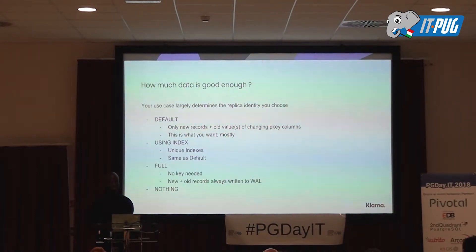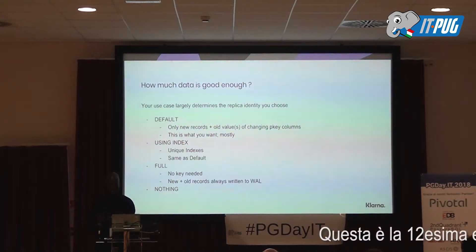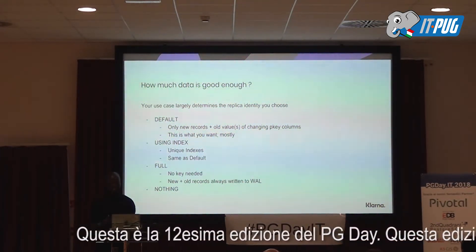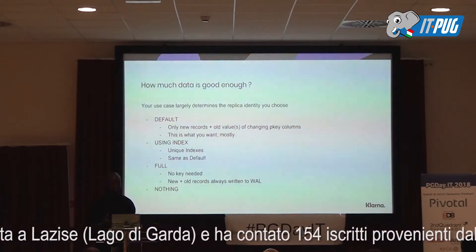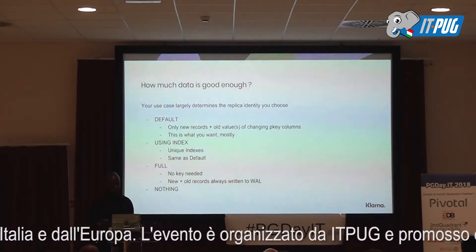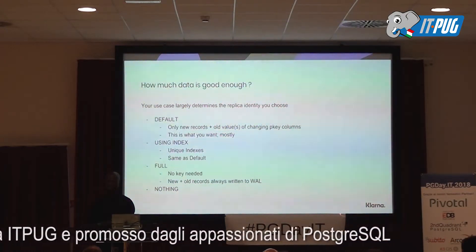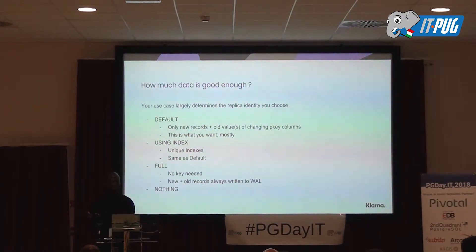You can set the replica identity to FULL, which means your table doesn't necessarily need to have a primary key or unique index. In this case you get all the changes — the new and the old — for all columns, all of the time. Of course, that will tell you almost immediately that the logging is going to be a lot and the amount of data you're fetching will be large. There's also replica identity NOTHING, which is also useful: if you want to turn off changes from a particular table, you set the replica identity to NOTHING and you can't fetch anything from it.